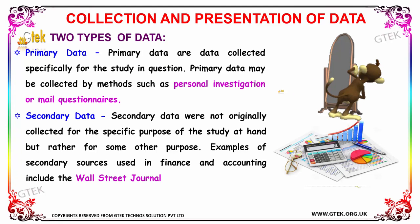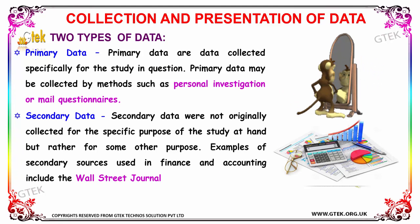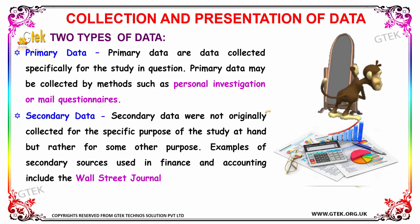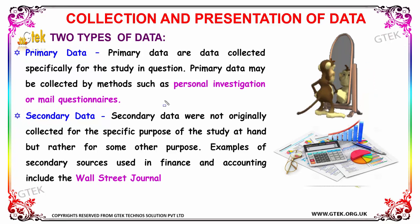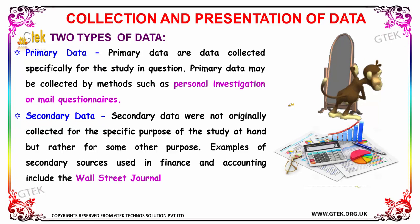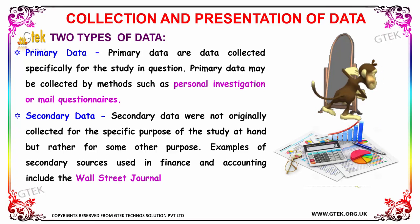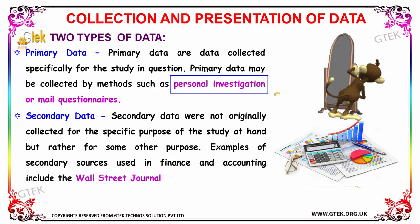We have two categories. The first one is primary data and the next one is secondary data. Primary data are considered to be the data which is collected specifically for the study in question. Primary data may be collected by methods such as personal investigation or other methods like mail questionnaires. These are considered to be some of the methodologies of primary data.